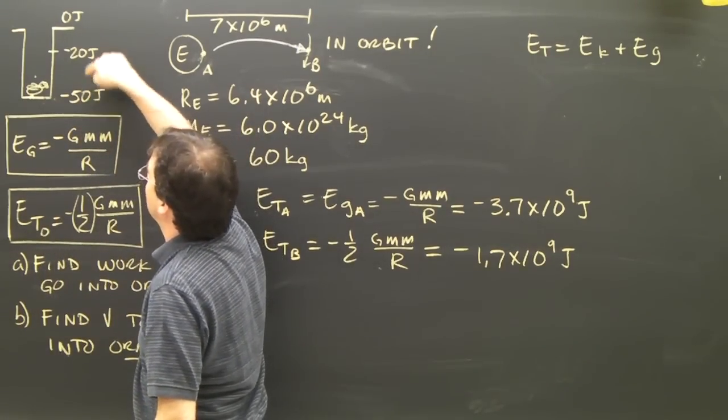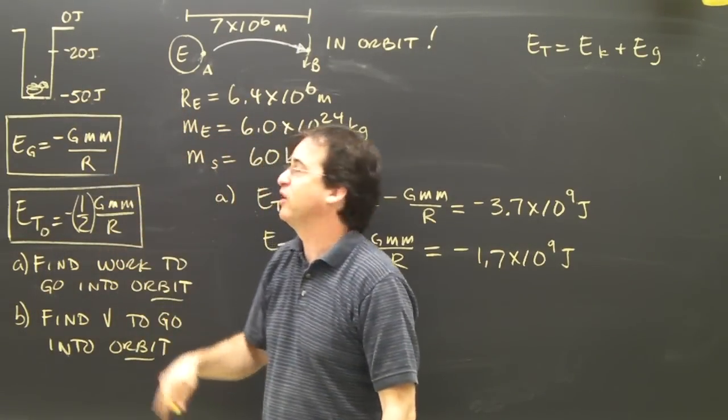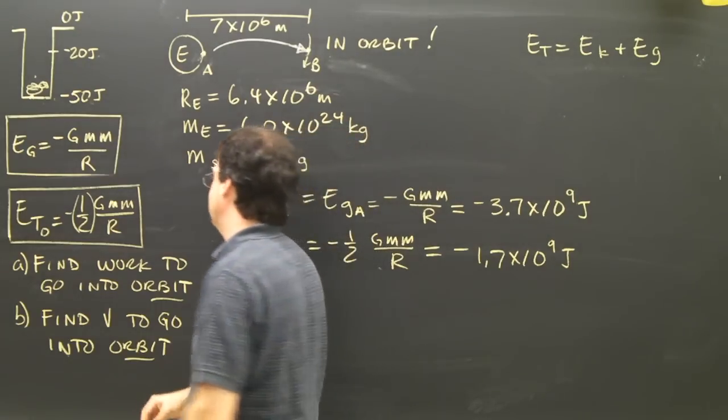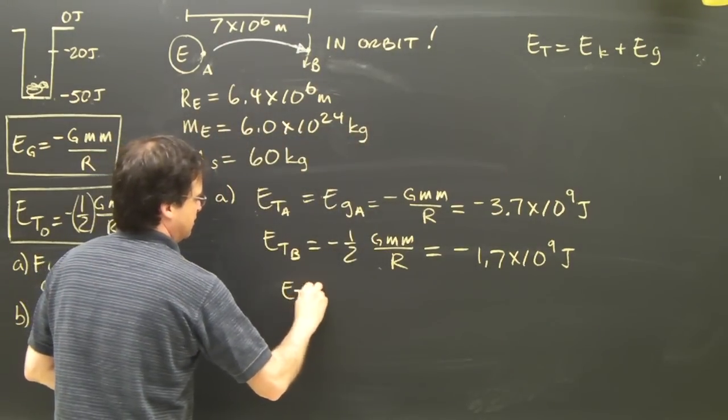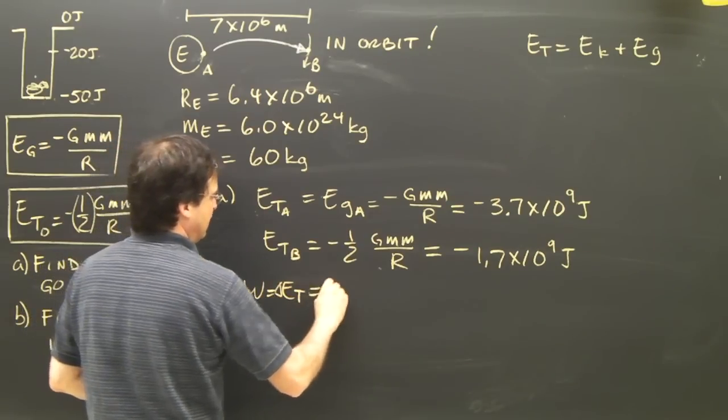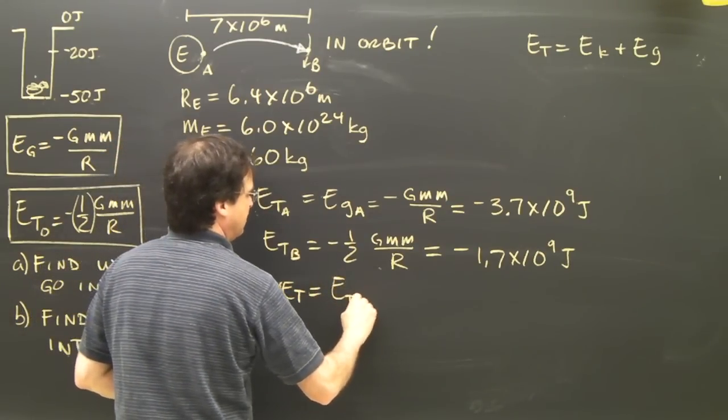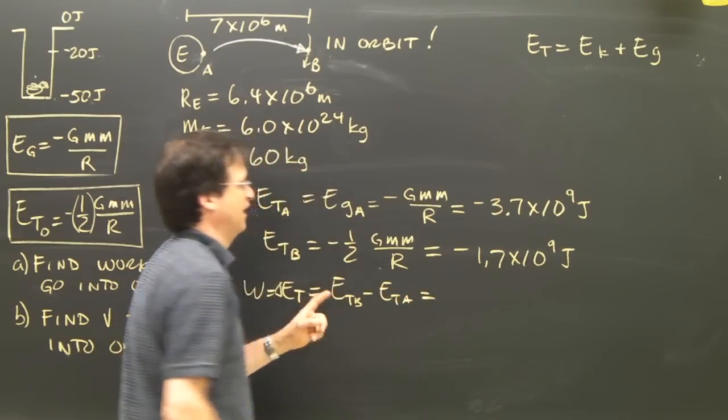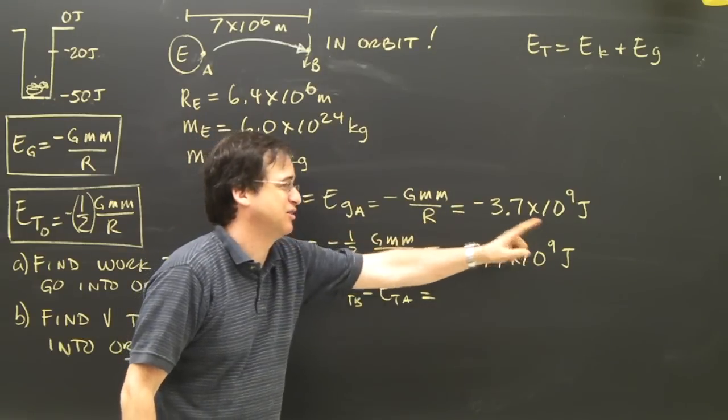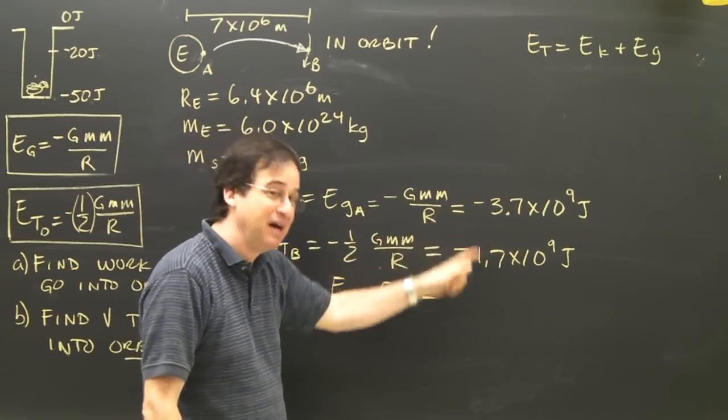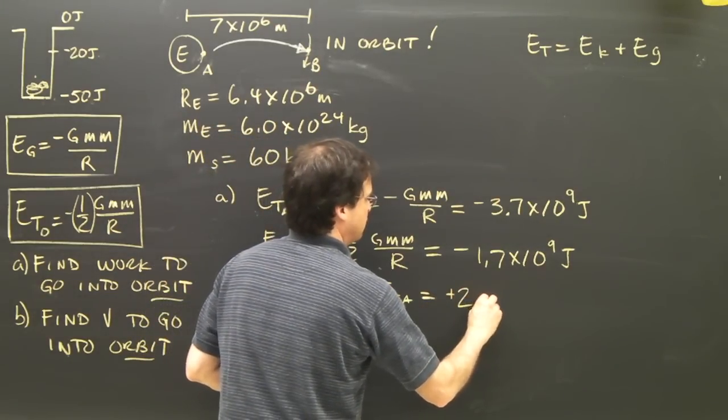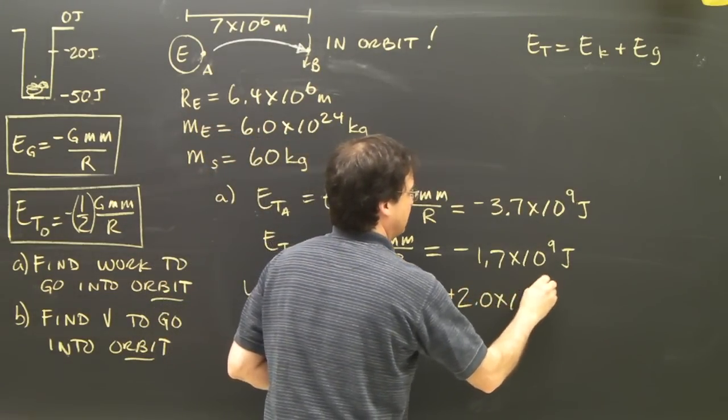Okay, just like my chicken here, how much did I add to the negative 50 to get to negative 20? I found the difference in those two was 30 joules. That's how much kinetic energy I had to add. So we want to find the difference. The change in the total energy, the work is the change in the total energy, which is the total at B minus the total at A. If you work that out, it's B minus A. Don't lose track of the negatives. Negative 1.7 times 10 to the 9 minus negative 3.7 times 10 to the 9. You'll end up with an answer that is positive 2.0 times 10 to the 9.